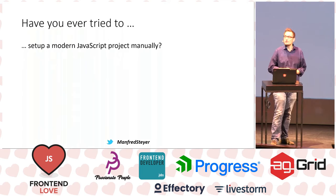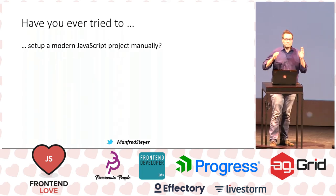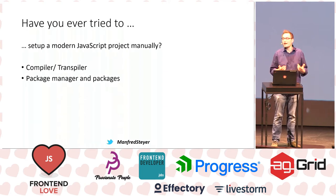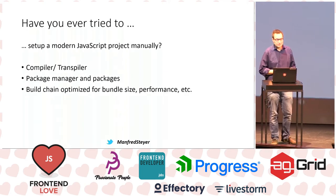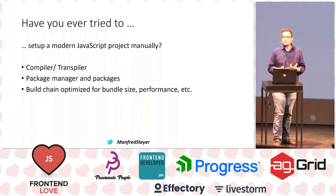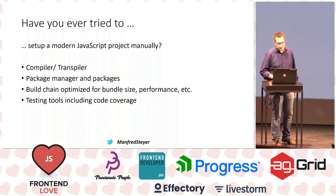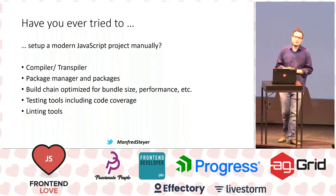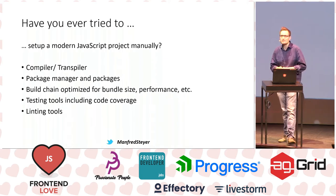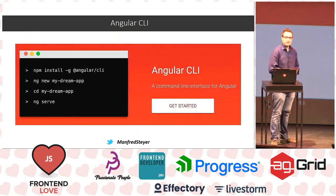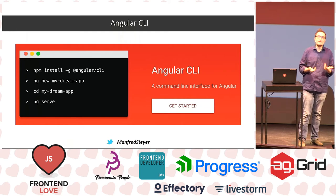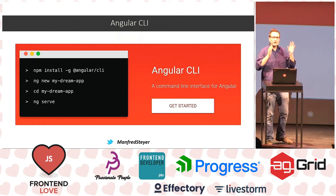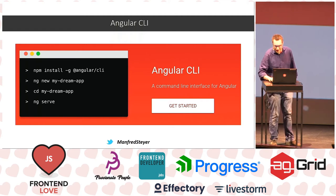Let's start with a question: have you ever tried to set up a modern JavaScript project manually? Because that involves so many things. For instance, you have to set up the compiler and the transpiler, you have to set up the package manager and download packages, you have to build a build chain that is optimized for bundle size and performance, you have to integrate testing tools, and you have to integrate a linter. The good news is that there are tools out there like the CLI that are doing this for you. The Angular CLI can be used for creating all this stuff automatically when it comes to an Angular project.